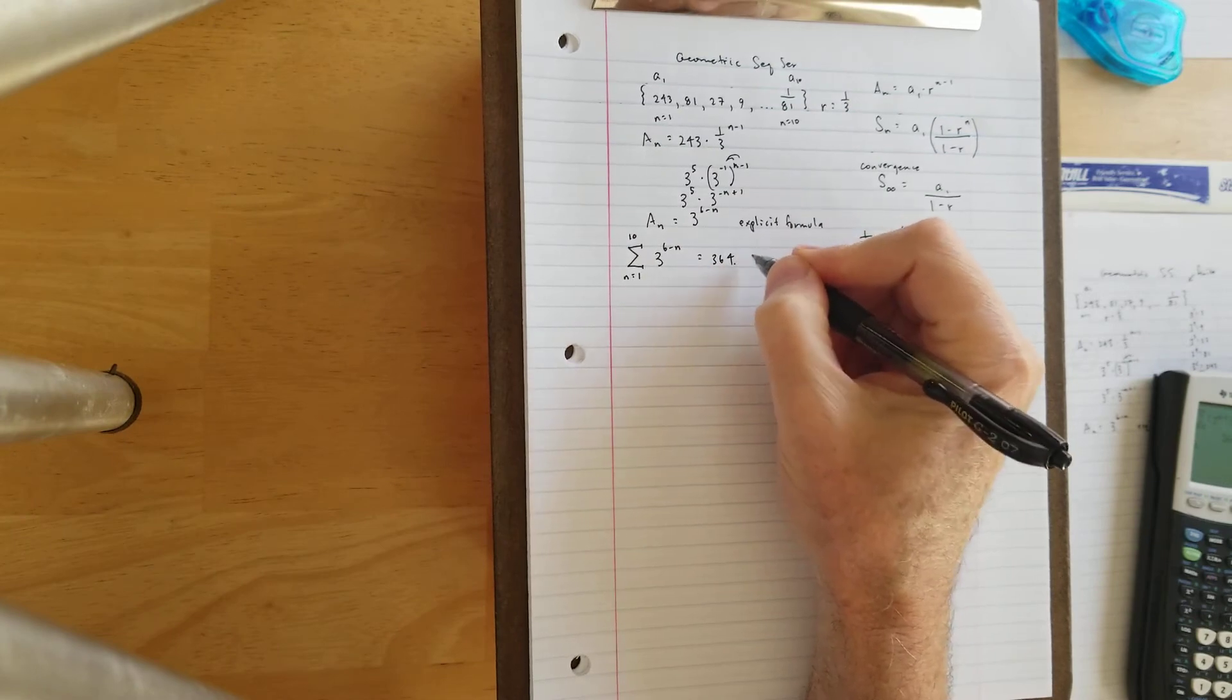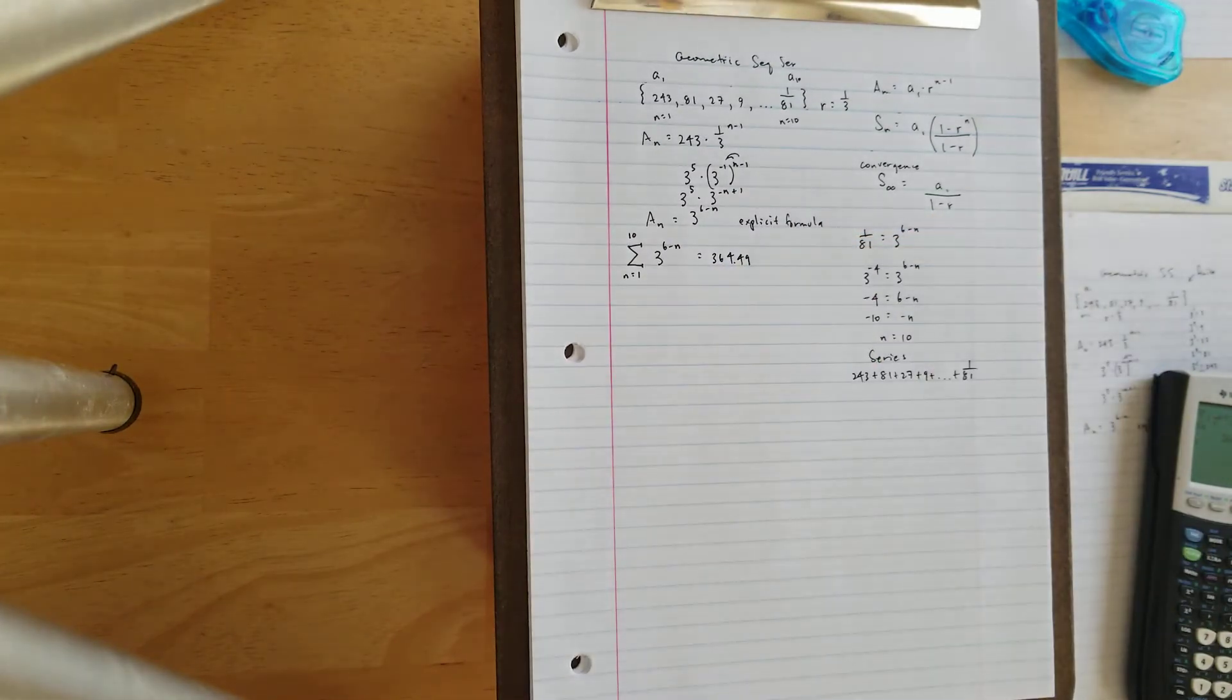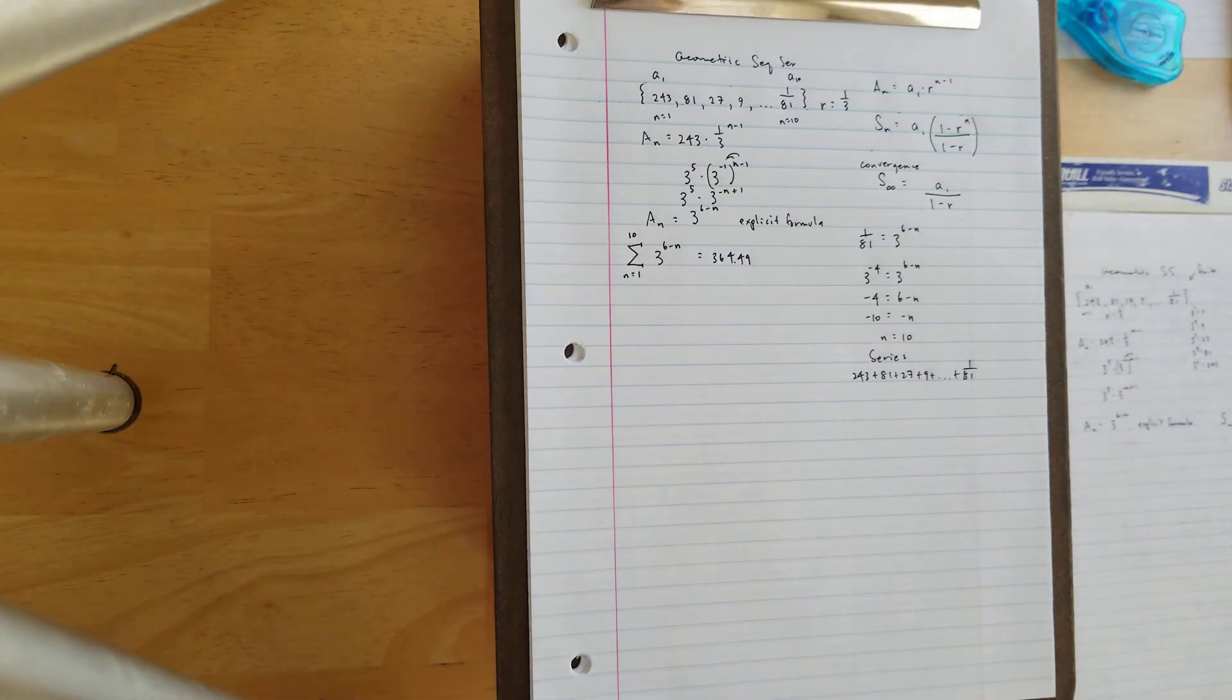364.49, something right around in that area. So that's going to be the sum using the calculator, as versus by hand.